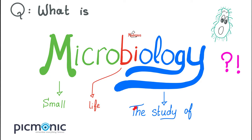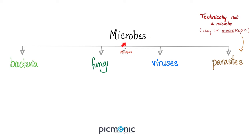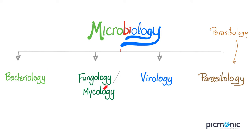Microbiology means the study of small life. Microbiology is divided into many branches such as bacteriology, mycology — or fungology. That's why the old name is Actinomyces: they thought it was a fungus. And the disease caused by it was called actinomycosis because they thought it was a fungus.